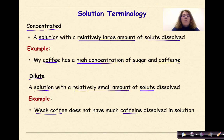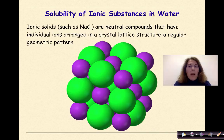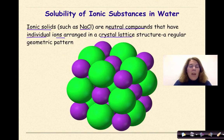Solubility of ionic substances in water: Ionic solids such as sodium chloride are neutral compounds that have individual ions arranged in a crystal lattice structure, a regular geometric pattern. Here's an example of a crystal structure in front of us. We could imagine that these green circles are our chloride ions and these purple ones are our sodium ions. We'd have Cl⁻ and Na⁺, and we'd see them in a repeating pattern. That is basically an ionic substance.